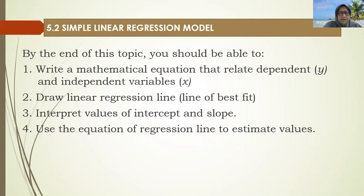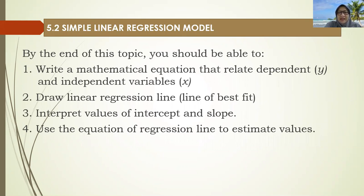In this particular chapter, we are going to look at: first, how to write or express a mathematical equation that relates dependent and independent variables. Second, to draw a linear regression line, that is, the line of best fit. Third, to interpret values of intercept and slope. And fourth, to use the equation of the regression line to estimate values.